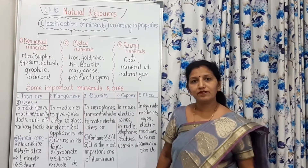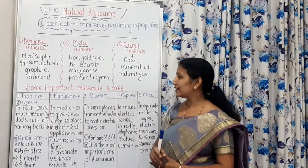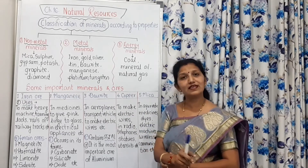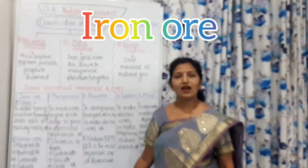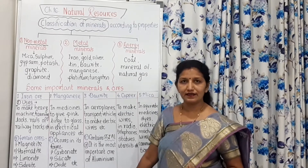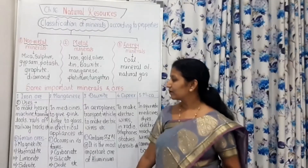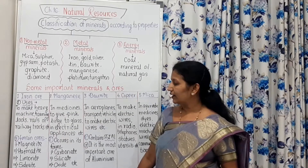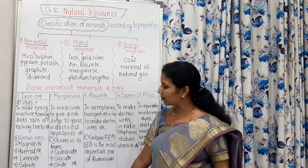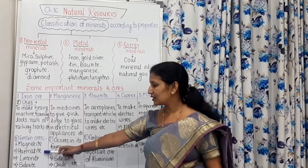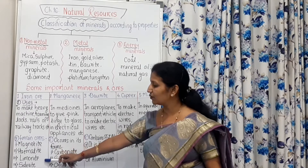Now we will study some important minerals as well as their ores and uses. Iron ore is the impure form of iron and contains a high proportion of iron. It occurs in four main ore forms: magnetite, hematite, limonite, and siderite.